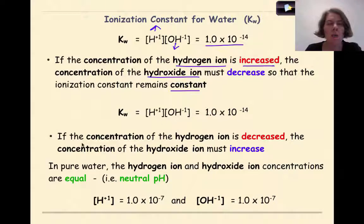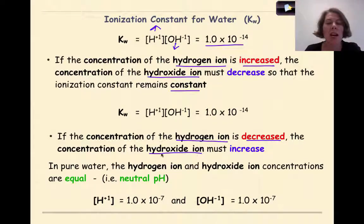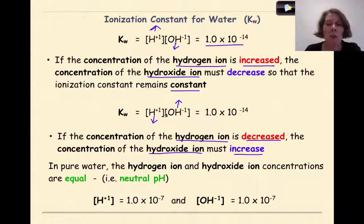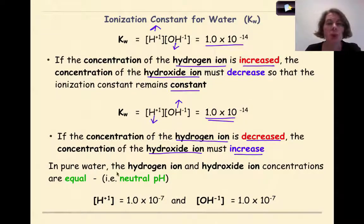Let's look at a different scenario. If the concentration of the hydrogen ion is decreased, the concentration of the hydroxide ion must increase. As a result, because we are always looking to keep this constant, this solution would become more basic. In pure water, the hydrogen ion and hydroxide ion concentrations are equal — in other words, a neutral pH.